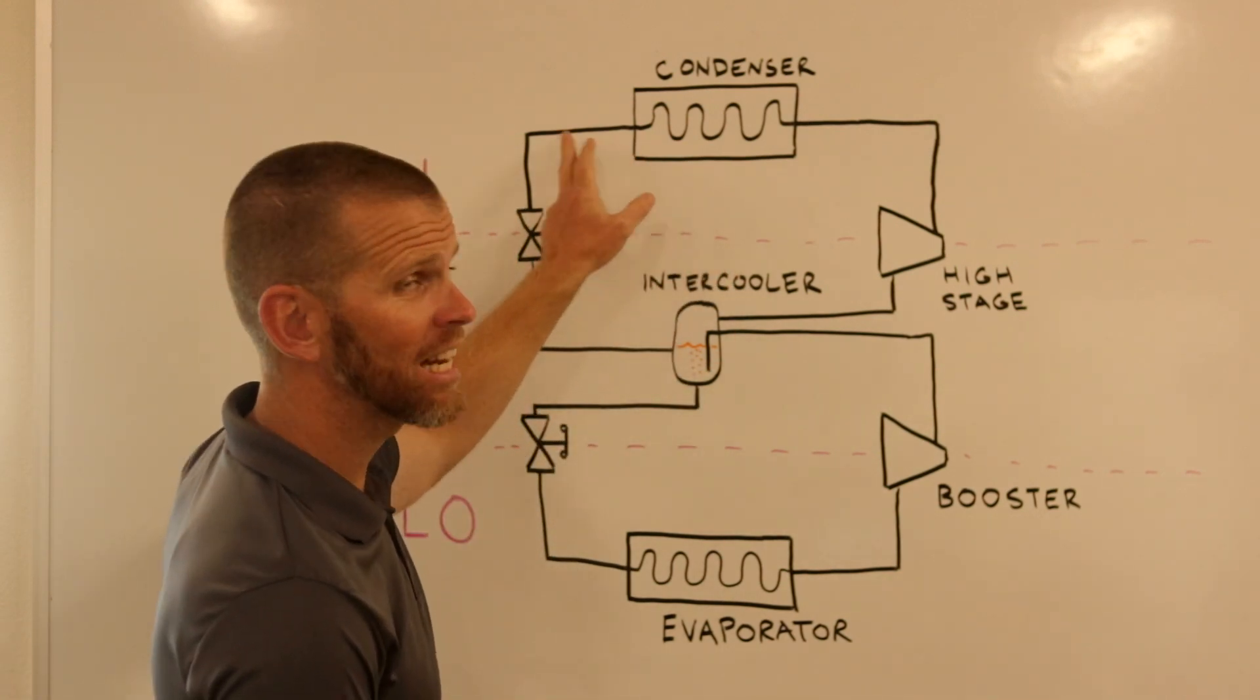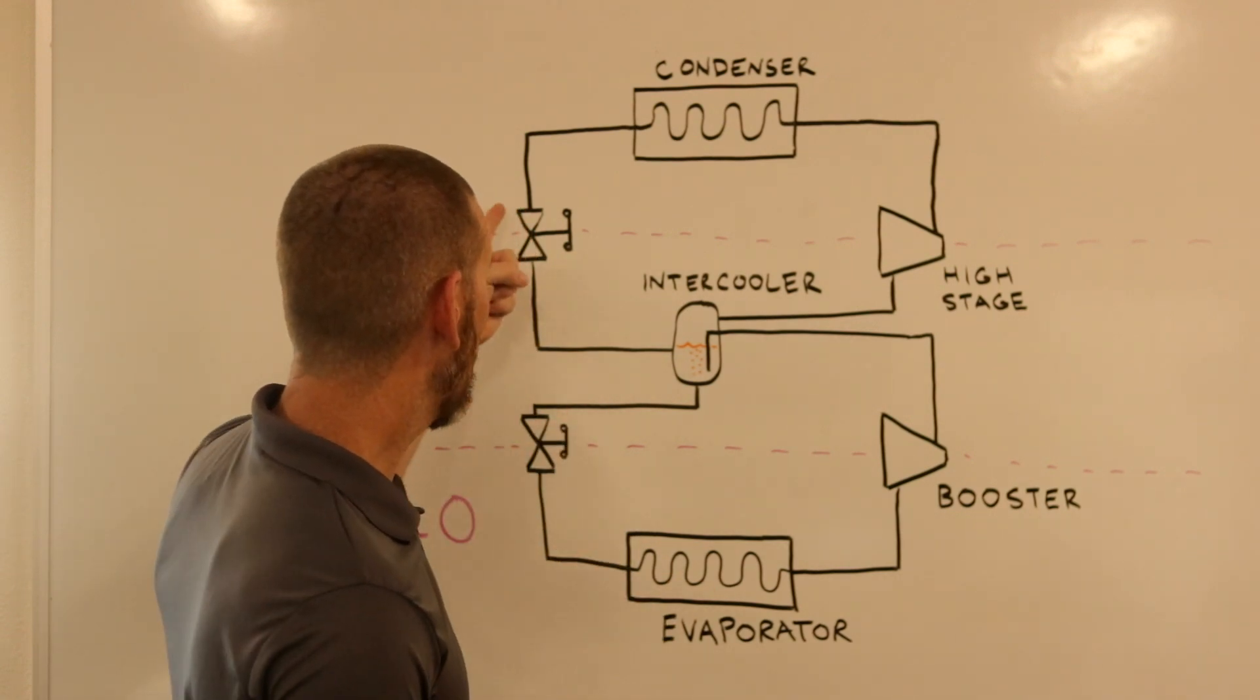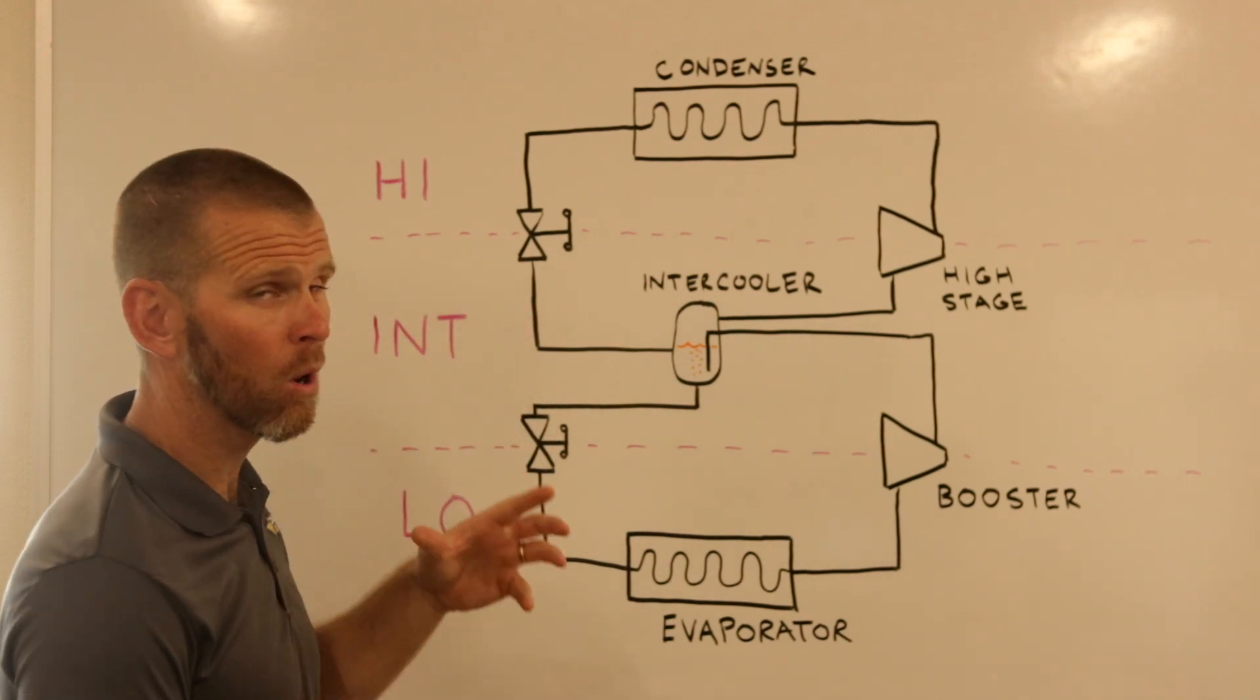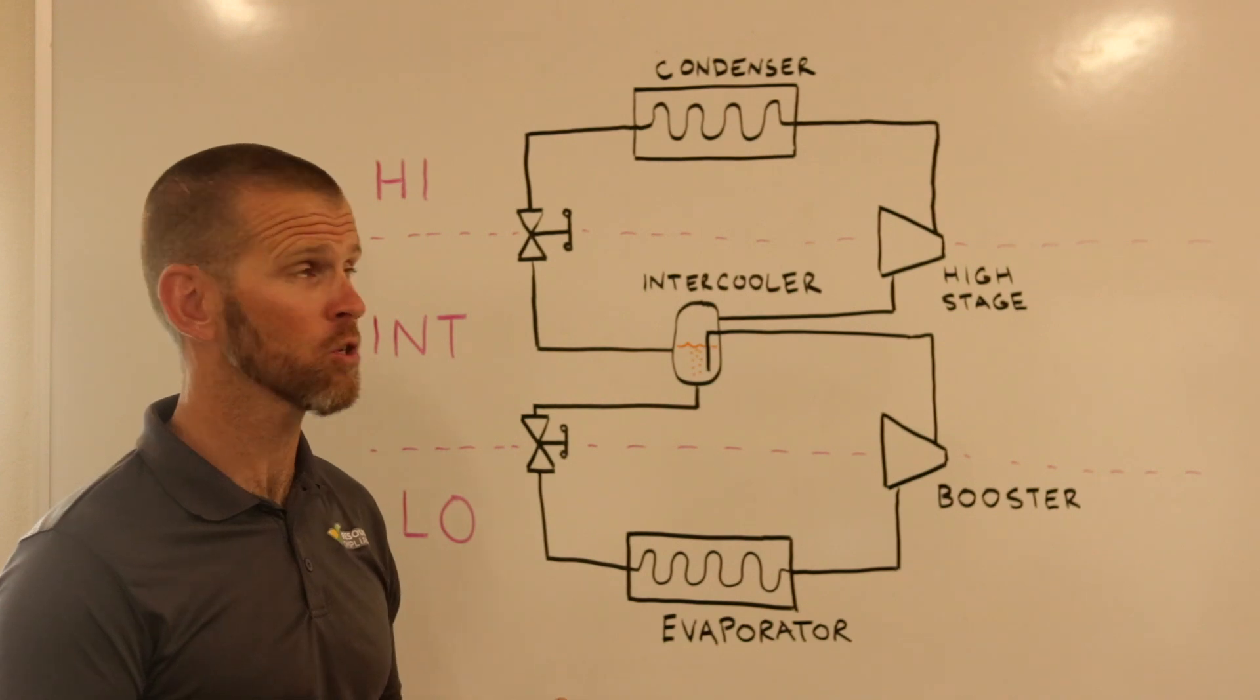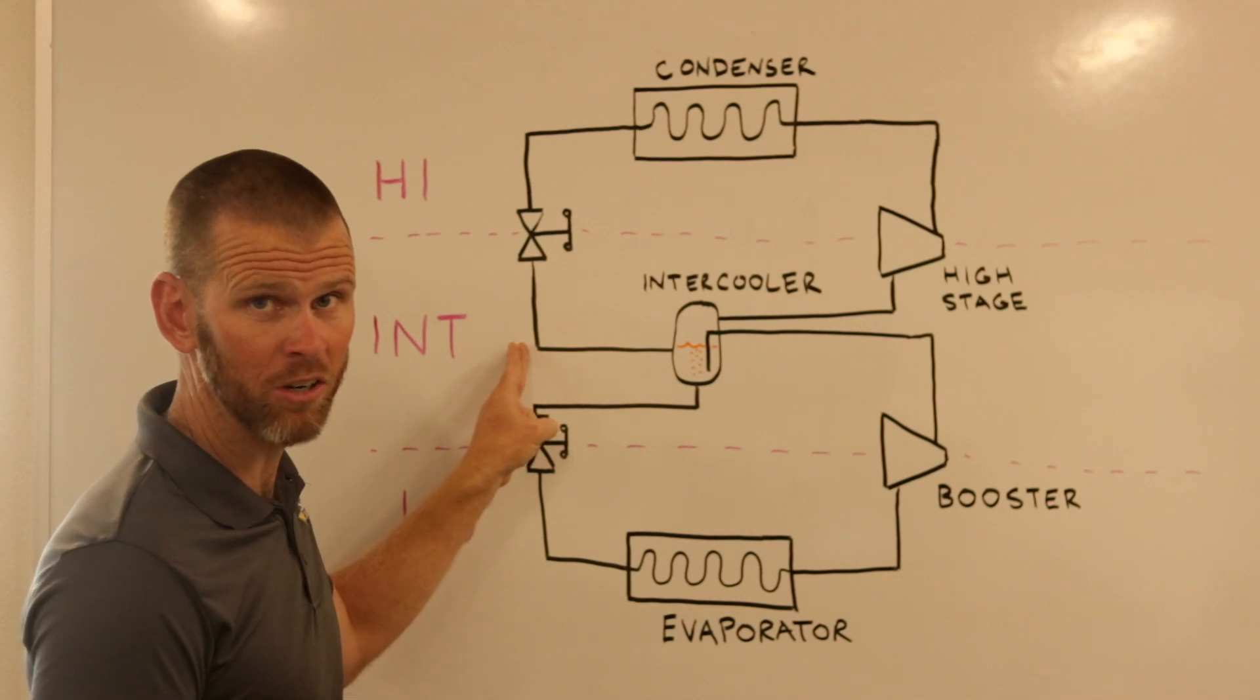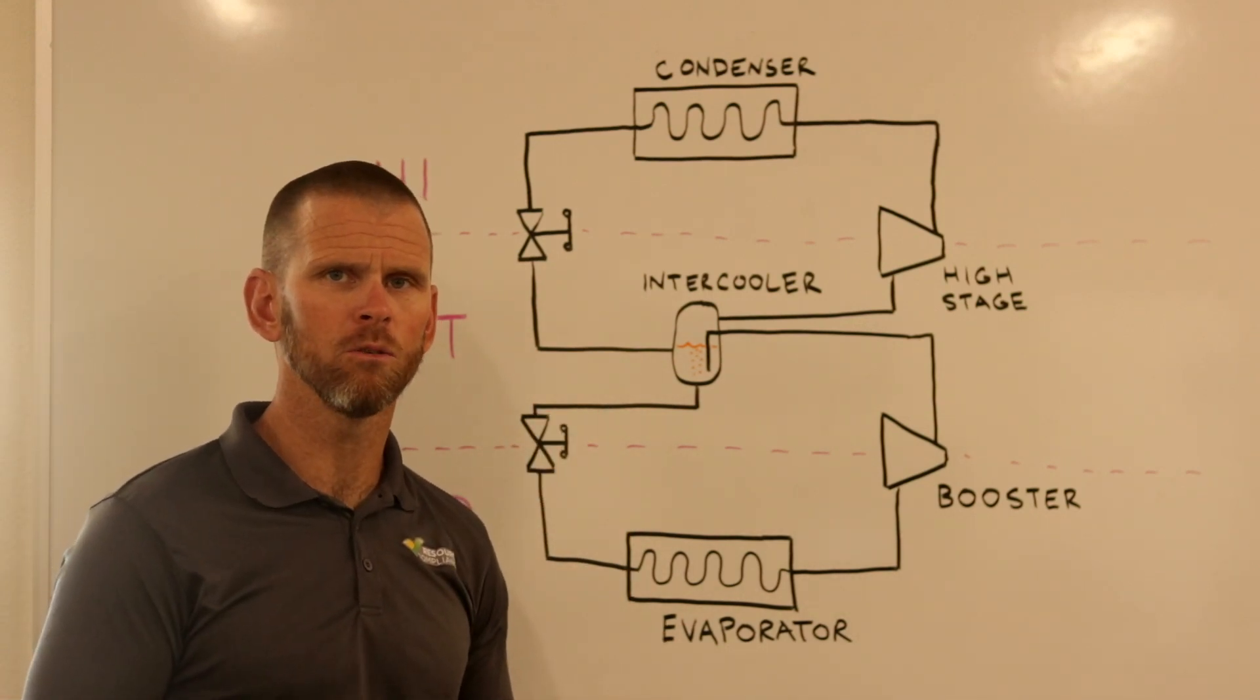From the condenser, liquid drains out and travels through some sort of expansion device. I've depicted an expansion valve here, which lowers the temperature and the pressure of the refrigerant as it passes through the expansion device.